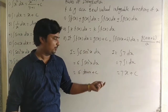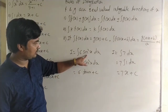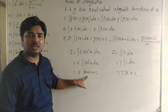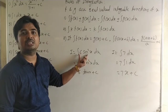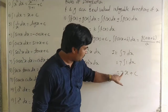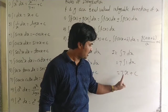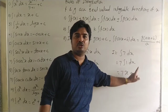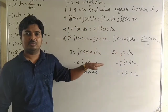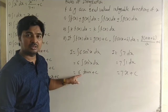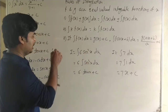Integration is the reverse process of differentiation — also called the anti-derivative. For example, integral of sec²x = tan x + C. Checking: derivative of 6 tan x gives 6 sec²x. Similarly, derivative of 7x + C gives 7. So integration and differentiation are reverse processes of each other.